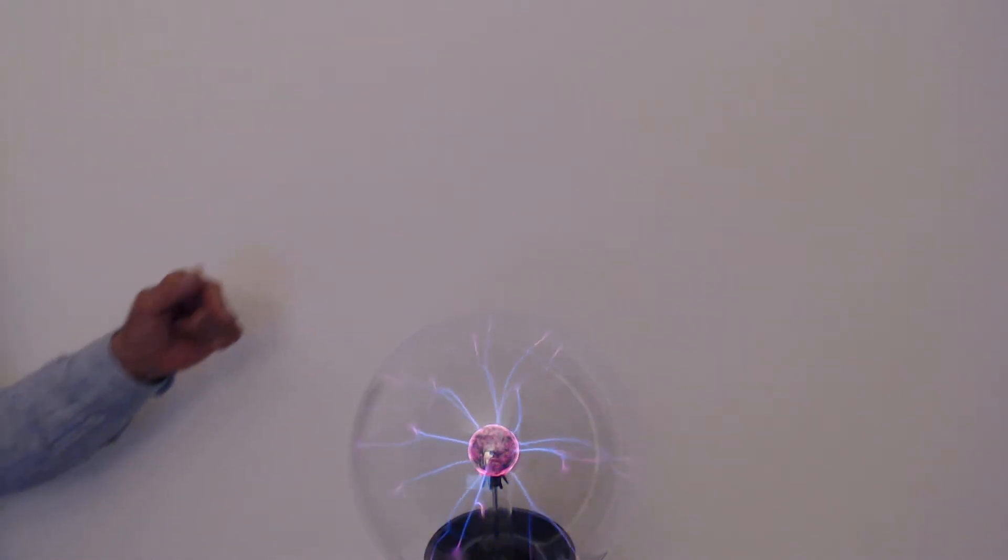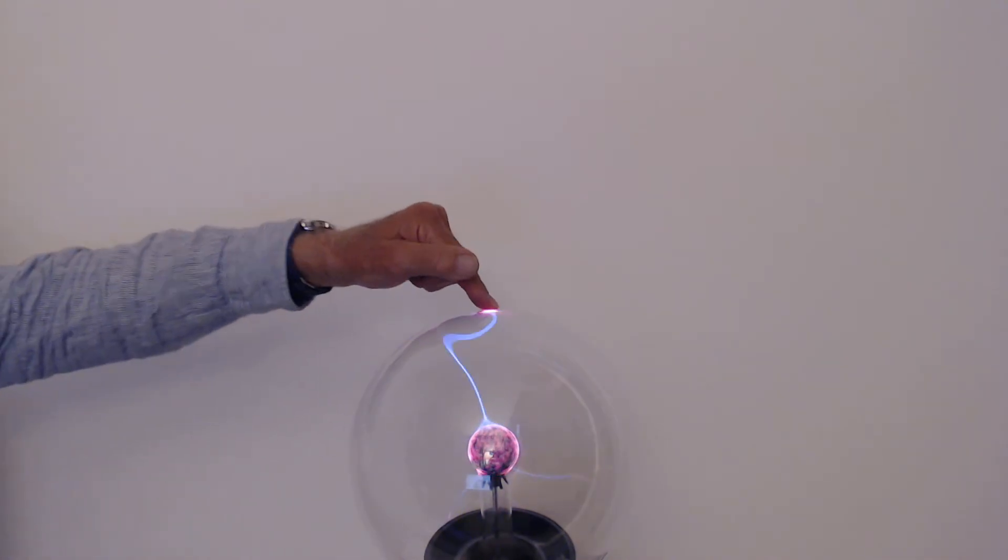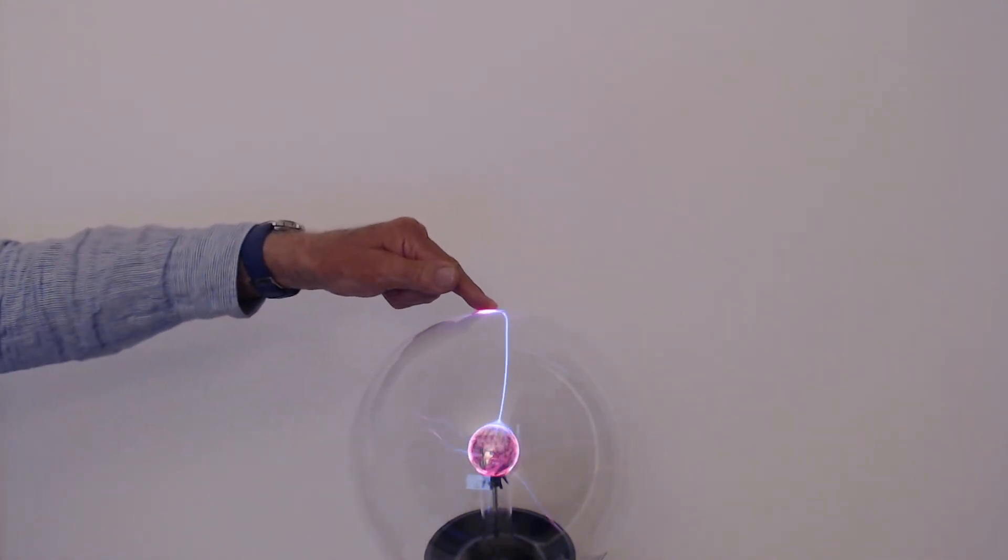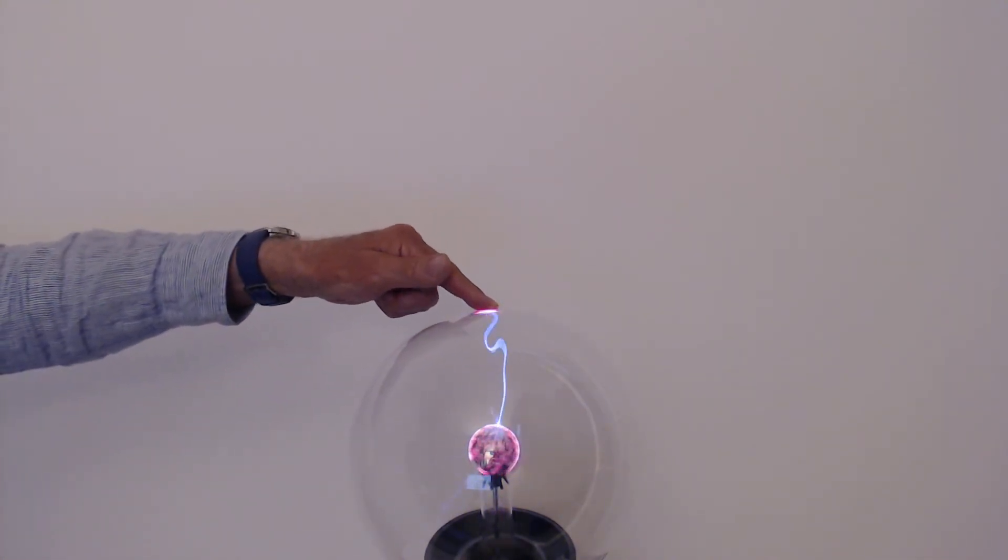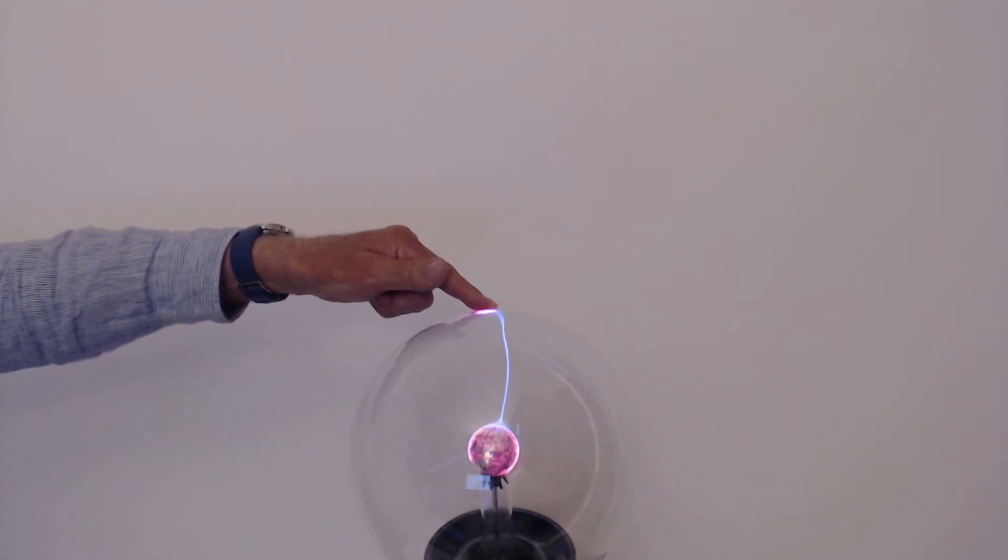You may even have tried touching it with one finger like this. And notice that when you do, you get one streamer which is much brighter than the others that you had before, and one that ends up on your finger.